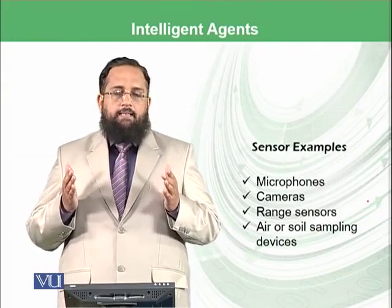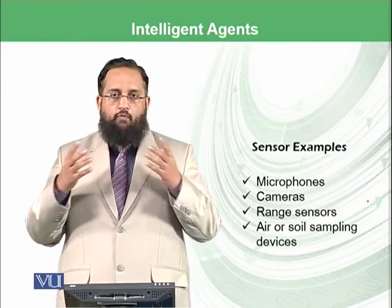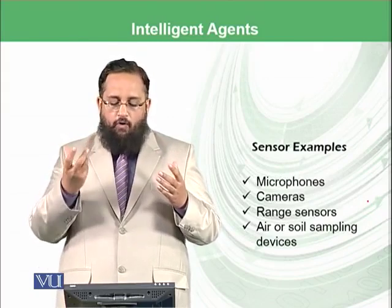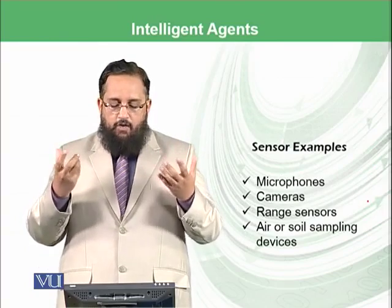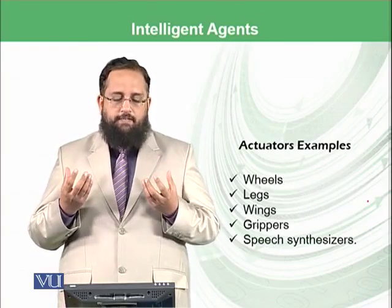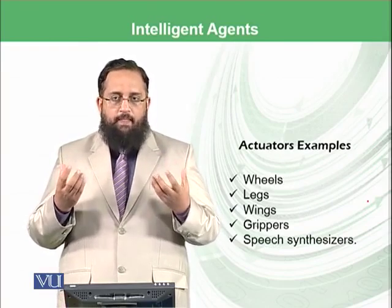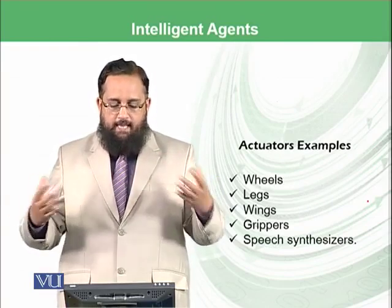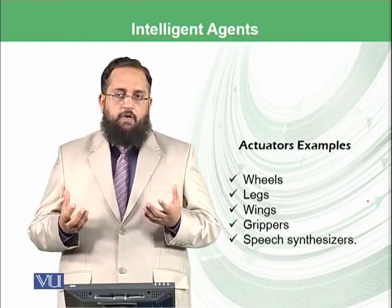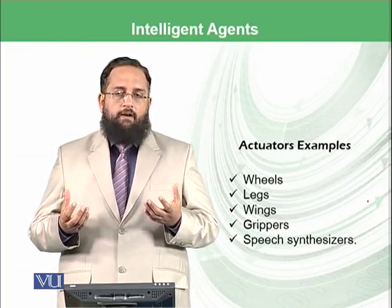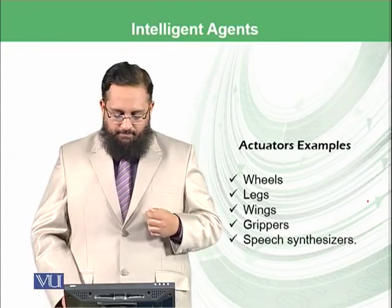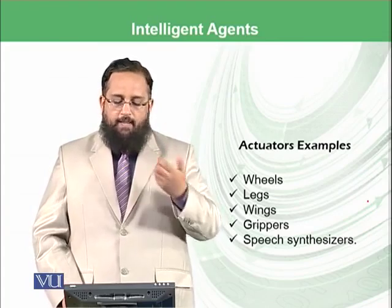Examples of sensors include microphones, cameras, range sensors, and air or soil sampling devices. Agents also have actuators such as wheels, legs, wings, grippers, and speech synthesizers. All of these kinds of things are called actuators, through which they can make an effect or respond and behave.